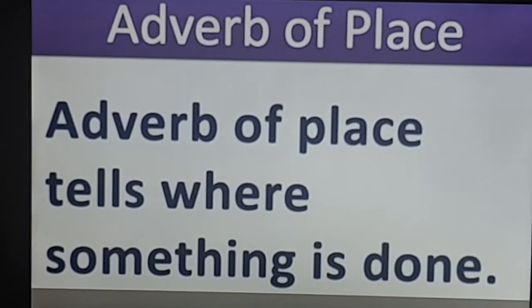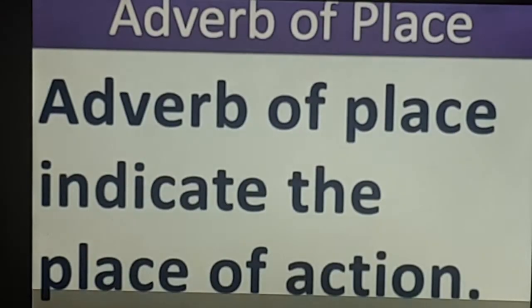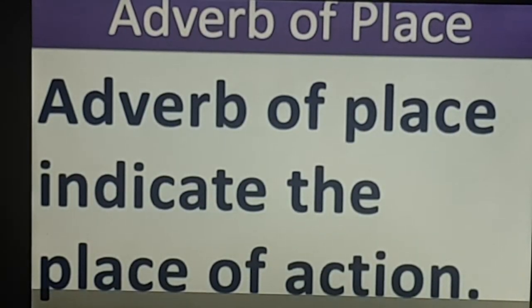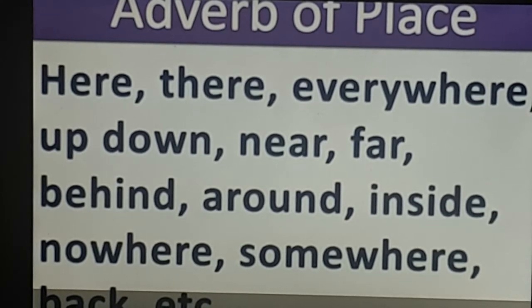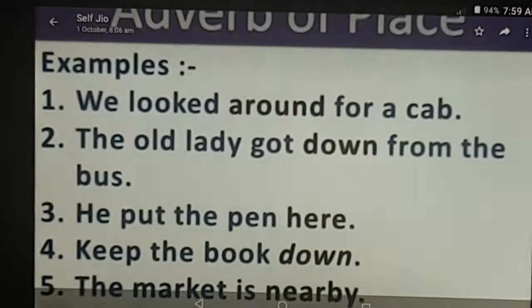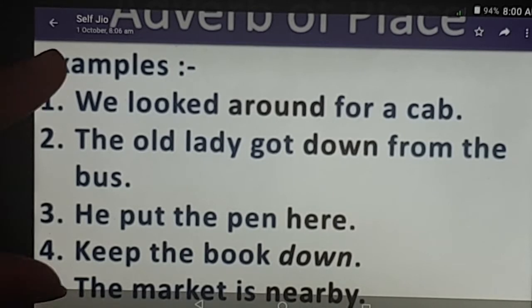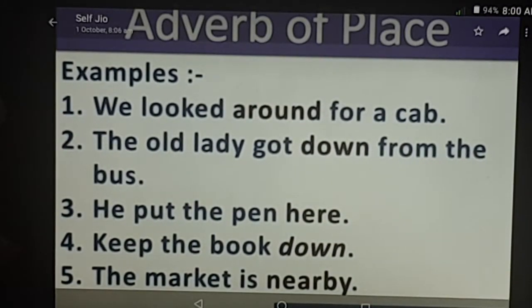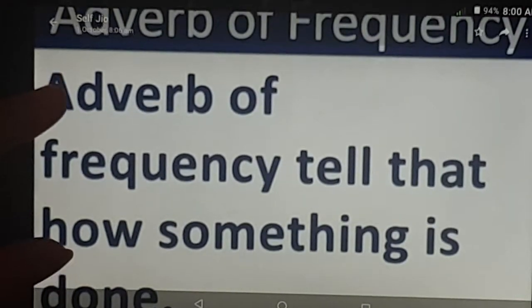Adverb of place tells us where something is done, or where some action is done — they indicate the place of action. Examples of these words: here, there, everywhere, up, down, near, far, behind, around, inside, nowhere, somewhere, back, etc. Used in sentences: 'We looked around for a cab. The old lady got down from the bus. He put the pen here. Keep the book down. The market is nearby.'